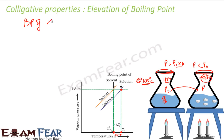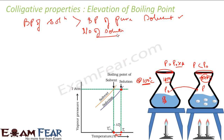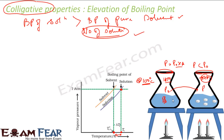Please note: the boiling point of a solution is always higher than the boiling point of the pure solvent. This elevation in boiling point depends only on the number of solute particles. It does not depend on the chemical property of the solute. So this is also a colligative property. For example, one mole of sucrose in 100 grams of water will boil at 100.4°C.